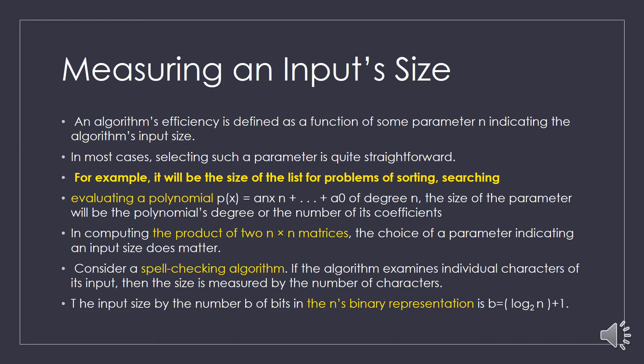Algorithm efficiency is defined as a function of some parameter n indicating the algorithm's input size. Finding the algorithm input size is not always straightforward. For example, if you consider a sorting and searching problem, we can easily find the input size — that is the number of elements. But if you consider the evaluation of a polynomial, the size parameter will be the polynomial's degree or the number of its coefficients.